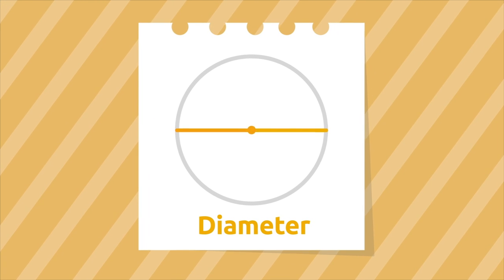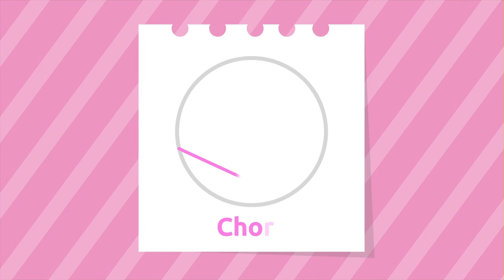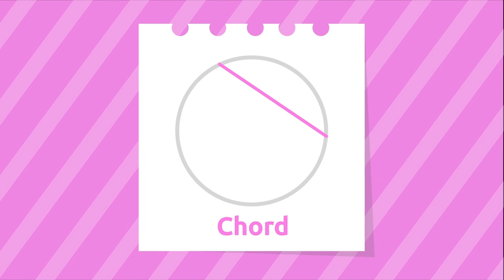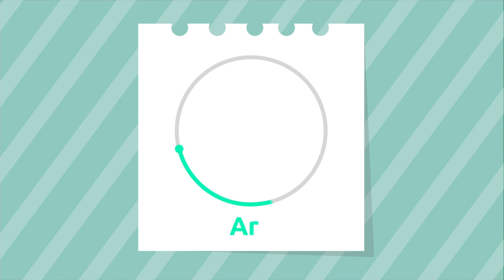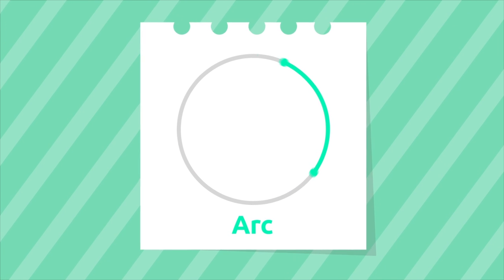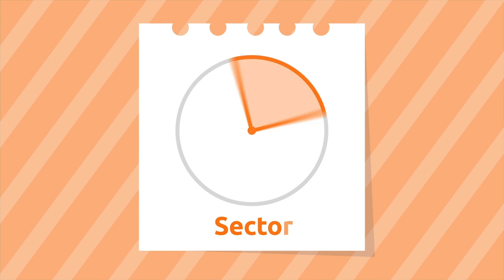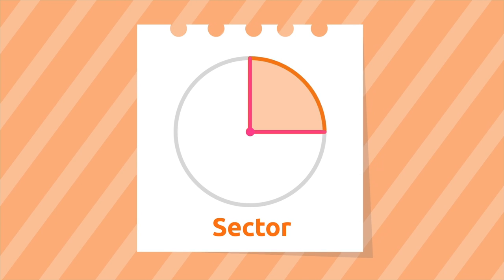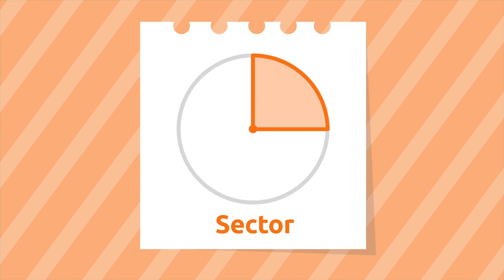The diameter is twice the radius. The cord is the segment which connects any two points of the circumference. The arc is the part of the circumference that lies between two points. The sector is the region between two radii and their arc — look, it's a slice of pizza!